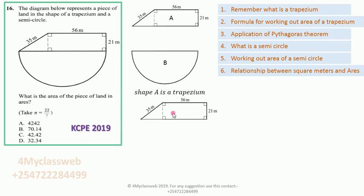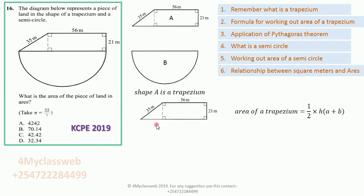Now that we have the trapezium, how do we get its area? The area of a trapezium is: one half multiplied by height multiplied by (a + b). Here, a and b are letters used to denote the shorter side and the longer side — the two parallel sides. So if you add those two sides and multiply by the height and by one half, you get the area of the trapezium.